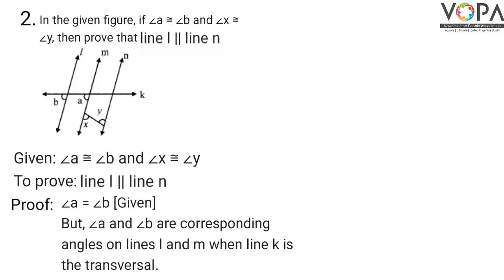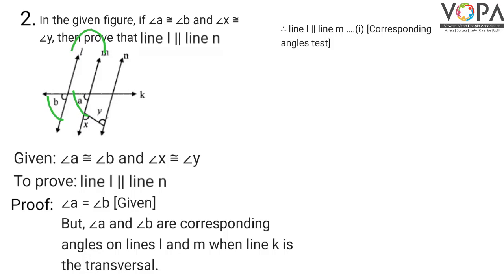We begin the proof. Angle A is equal to angle B — given. Angle A and angle B are corresponding angles on lines l and m when line k is the transversal. Therefore line l is parallel to line m. Reason: corresponding angles test. Number this as statement 1.